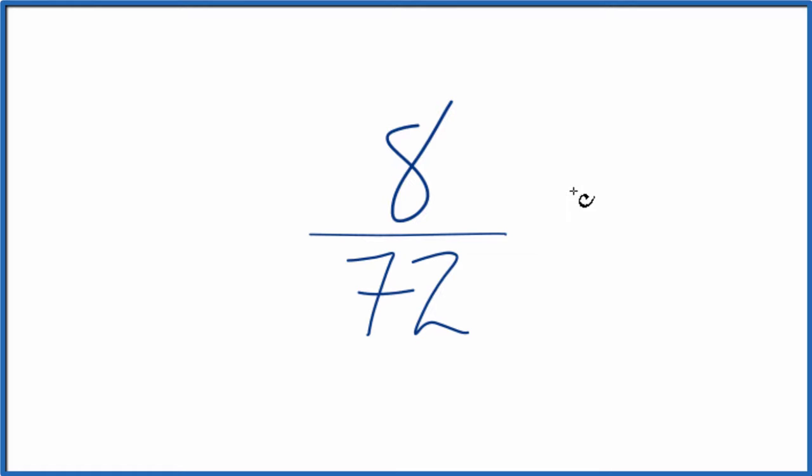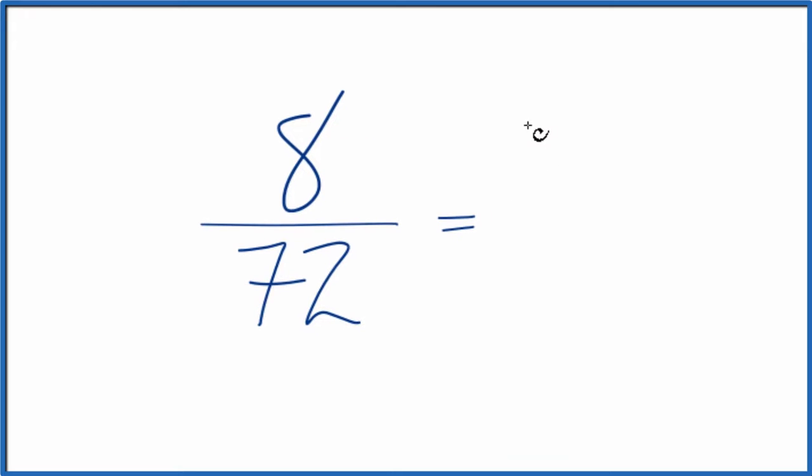If you know your multiplication tables, you'll know that 8 goes into itself once, and 8 goes into 72 nine times. 9 times 8 is 72. So if we divide 8 by 8, we get 1, and then if we divide 72 by 8, we'll get 9. And we'll have simplified the fraction 8/72 down to 1/9. We can't reduce this any further.